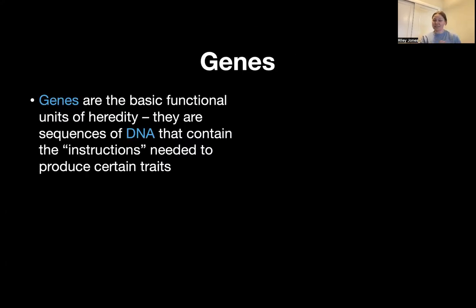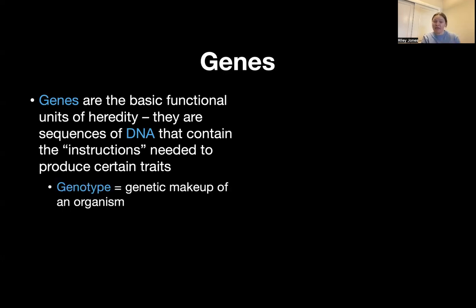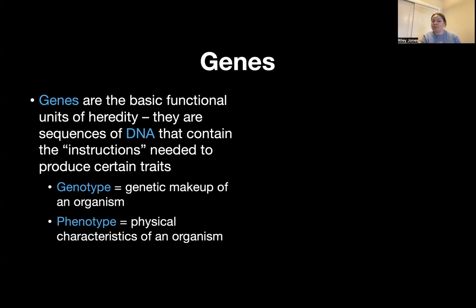So what exactly are genes? Genes are the basic functional units of heredity, and they are sequences of DNA that contain the instructions — basically the code — needed to produce certain traits, because DNA codes for proteins, which then give us our physical traits that we see in genetics. A genotype is the genetic makeup of an organism, and I'll show an example of that in just a minute. And the phenotype is the physical characteristics of that organism. So phenotypes and genotypes go hand in hand, and the phenotype is just the physical — what we can physically see — of the genotype.